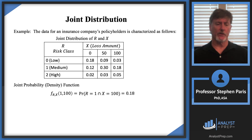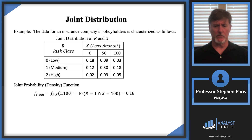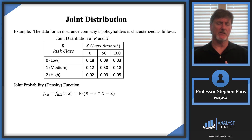Another shorthand notation I'll use will be just cap F with a subscript of 1 comma 100, where it's implied that the 1 is the cap R value and the 100 is the cap X value. Generally, F with a subscript of R X equals the probability that cap R equals R and cap X equals X.